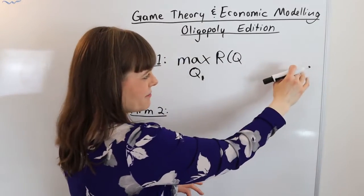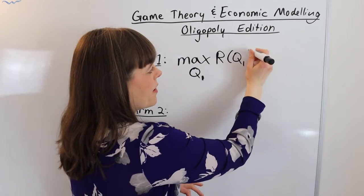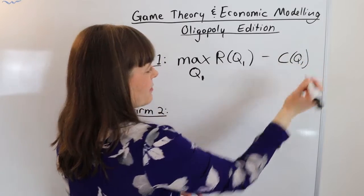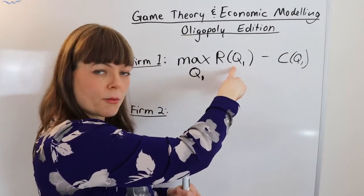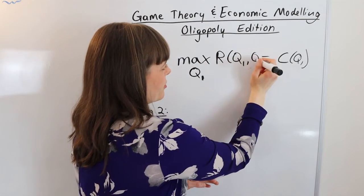I will also keep the objective function simple by letting our profit just be revenue minus cost. I'm going to leave a little bit of room here because revenue depends not only on how many we produce but also on how many the other player in the market produces.